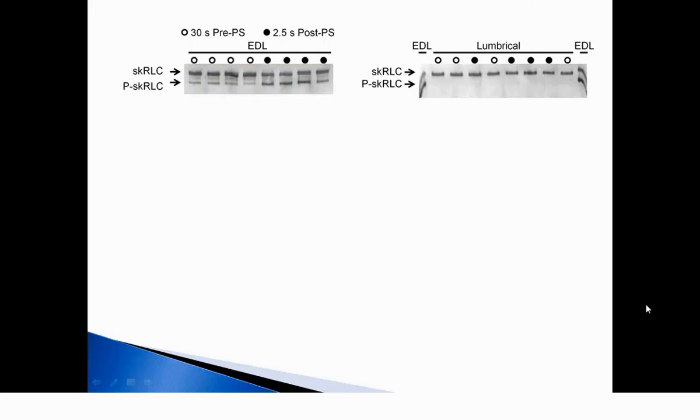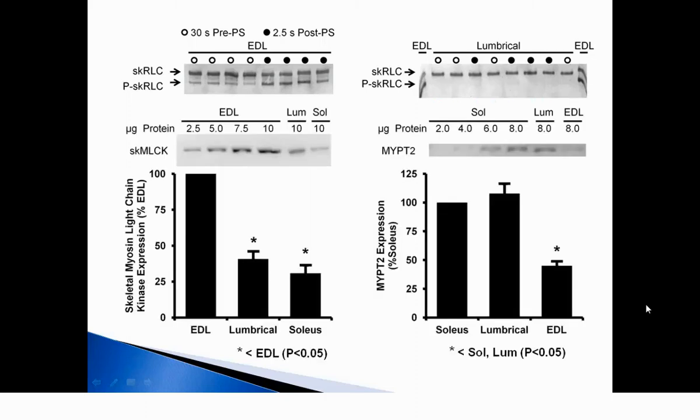Conversely, lumbrical muscles had no signs of regulatory light chain phosphorylation in either the unpotentiated or potentiated states. Similarly, Western blotting data revealed that relative to EDL, the lumbrical muscles had low levels of myosin light chain kinase and high levels of myosin-targeting phosphatase. The kinase phosphatase profile of lumbrical was actually very similar to that of the soleus, and the soleus doesn't potentiate.